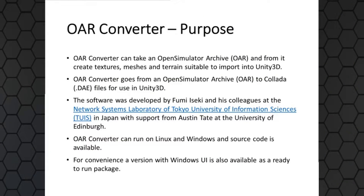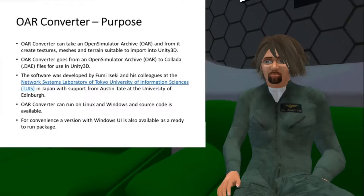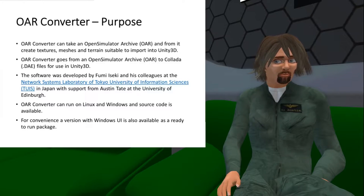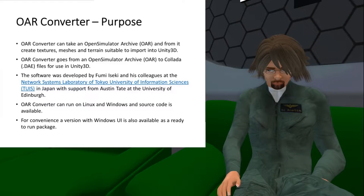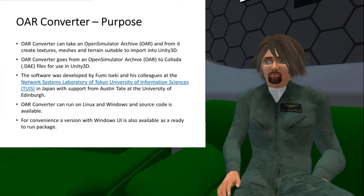The OAR Converter's purpose is to convert an OpenSim archive file. A lot of you know about those archive files — they're very useful ways of archiving regions so you can move them between different OpenSim grids, or save and restore them if anything's gone wrong. It's a backup mechanism, but also a portability transfer mechanism. It saves pretty much everything on the region: scripts, particle effects, all sorts of information about the way the environment works, as well as the 3D models and actual 3D content.